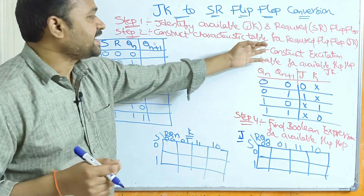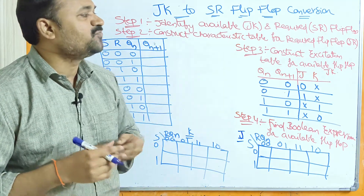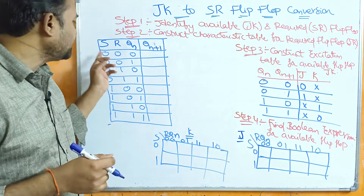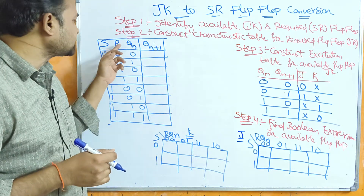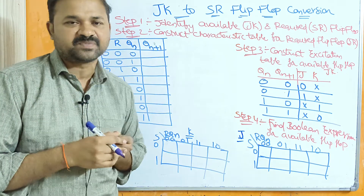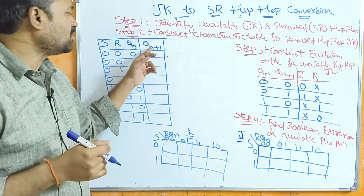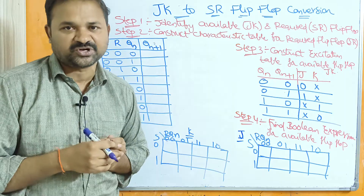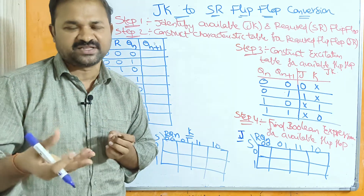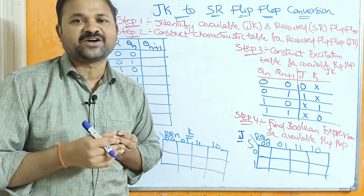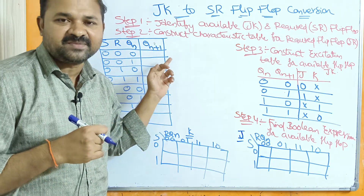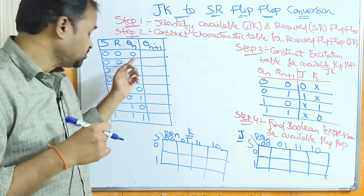First let us see the characteristic table for the required flip-flop, that is SR flip-flop. Here the inputs are S, R, and Qn. Qn is nothing but the current state, and the output is the next state. Here we have 3 inputs, so totally we will have 2 to the power 3, that is 8 combinations. The first combination is decimal number 0, binary number 0, 0, 0.